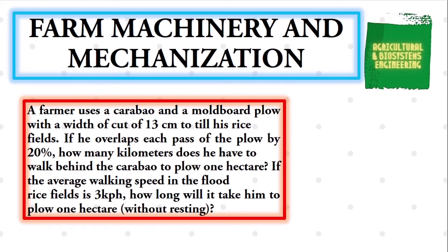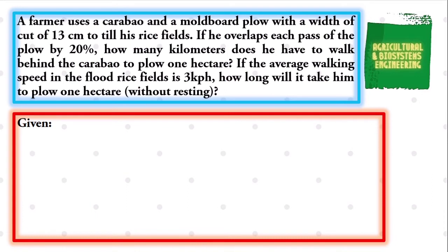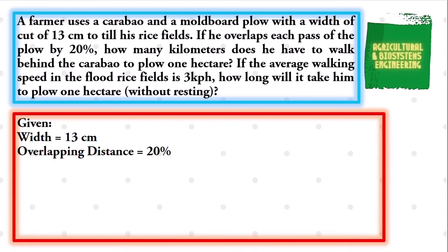If the average walking speed in the flood rice fields is three kilometers per hour, how long will it take him to plow one hectare without resting? To begin with, let us first identify our given. We have the width of 13 centimeters, the overlapping distance of 20%, the speed of three kilometers per hour, and the area of one hectare, which is just the same as 10,000 square meters.